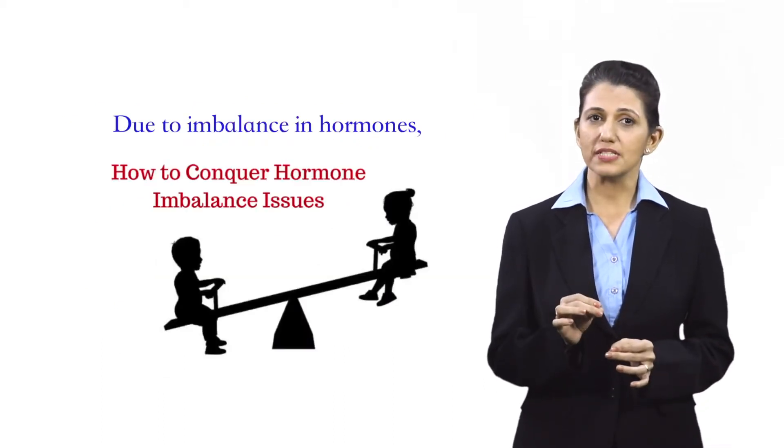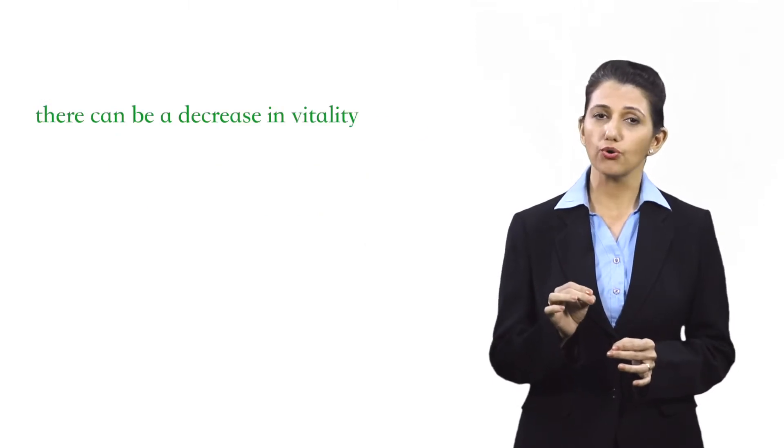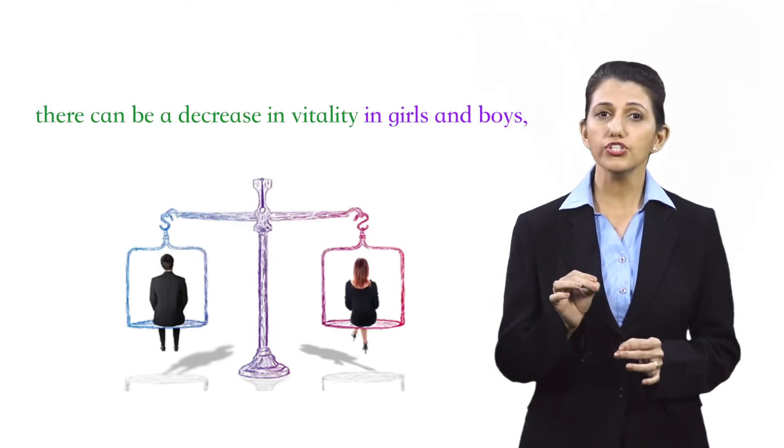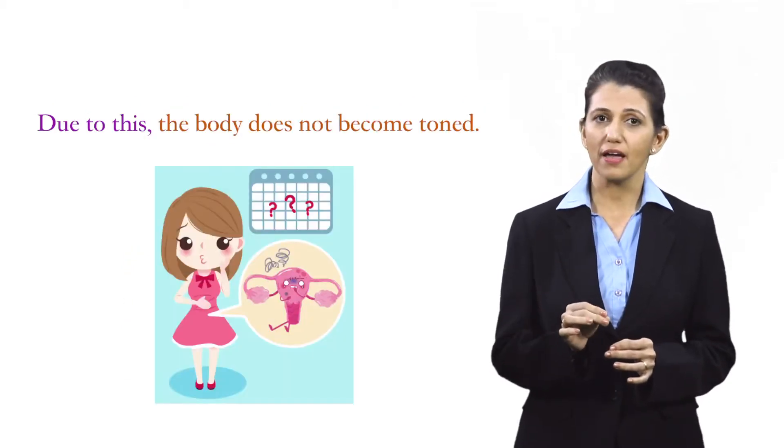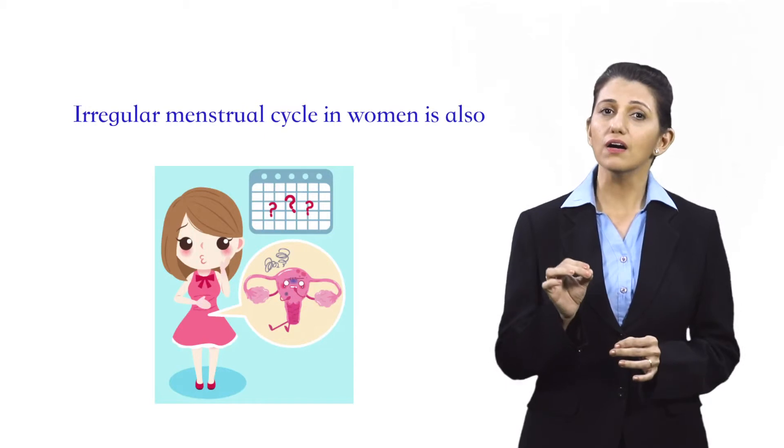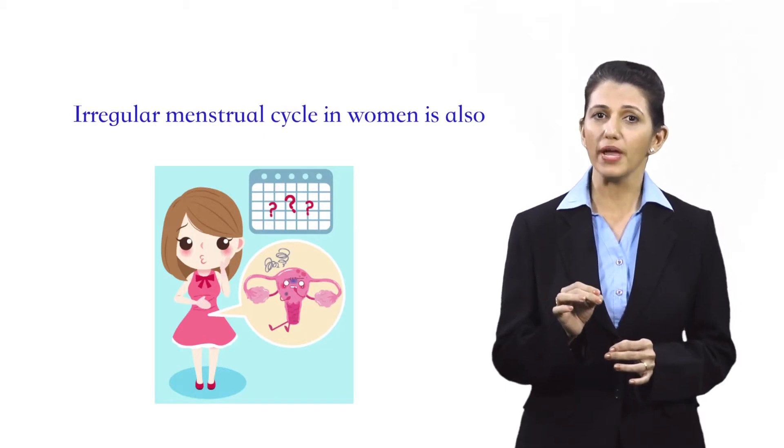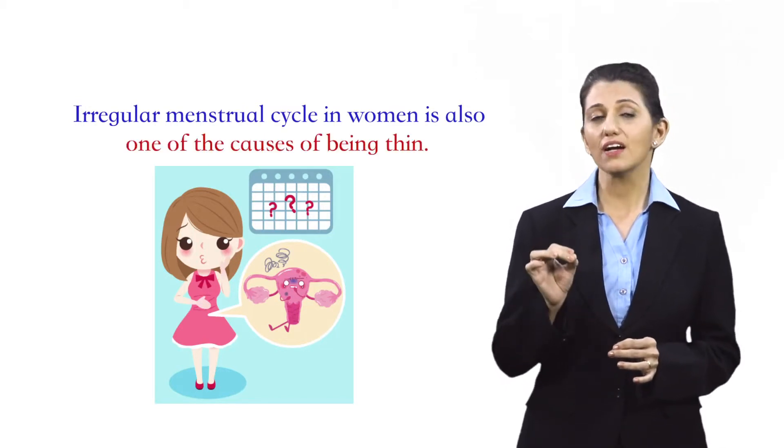Due to imbalance in hormones, there can be a decrease in vitality in girls and boys, men and women. Due to this, the body does not become toned. Irregular menstrual cycle in women is also one of the causes of being thin.